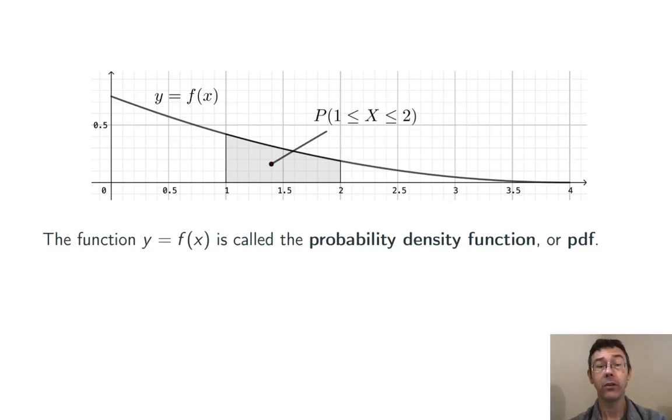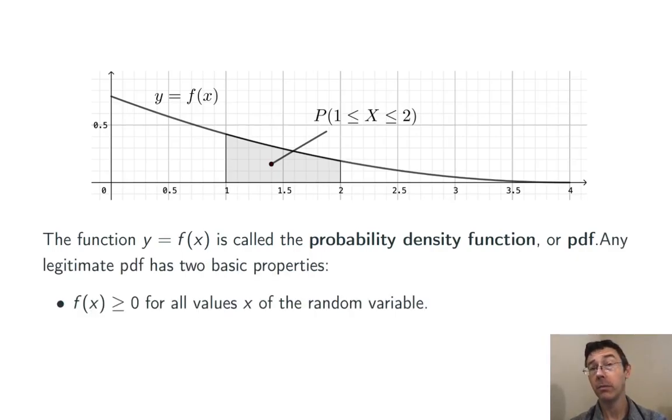This density curve gets called the PDF, the probability density function. Any legitimate PDF has to have a couple of basic properties.